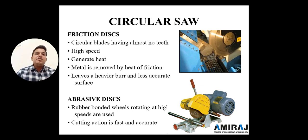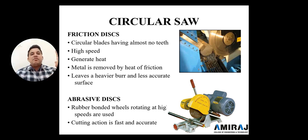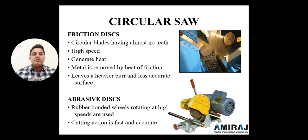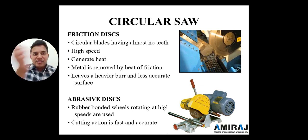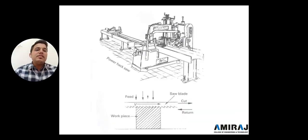The abrasive disc uses rubber-bonded wheels rotating at high speed. The cutting action is fast and accurate. We use abrasive discs at construction sites and fabrication sites for window frames, grills, and cutting purposes. At construction sites for rebar cutting, we also use abrasive discs.